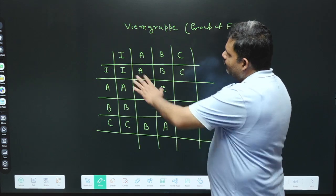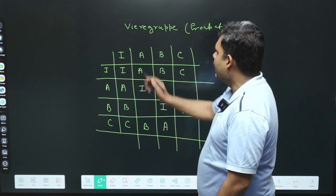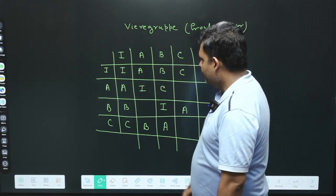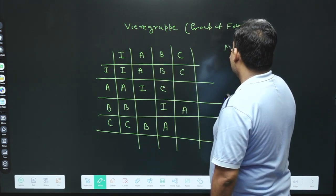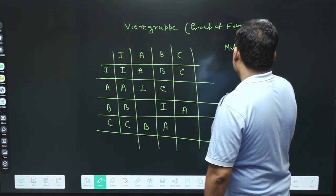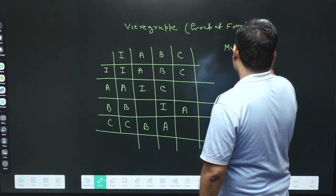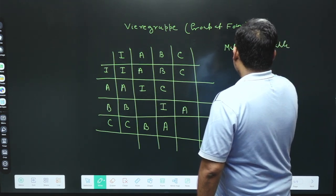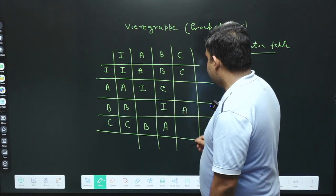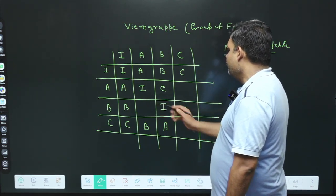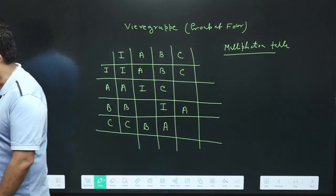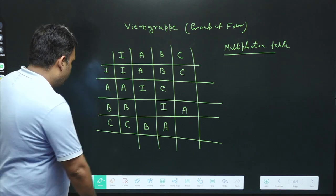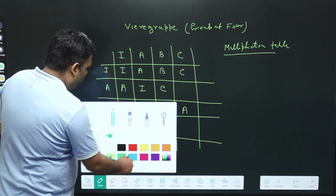What is given is there are four elements: I, A, B, C, and the multiplication table is also given. In this multiplication table some elements are missing, so what we have to do is fill in the missing elements. Let's try to go straightforward on how we can fill all these elements.